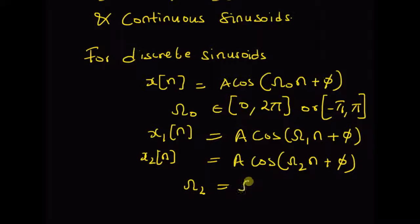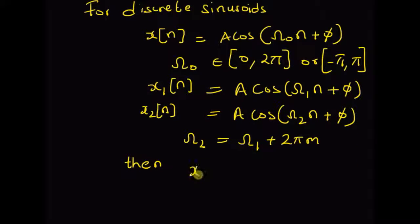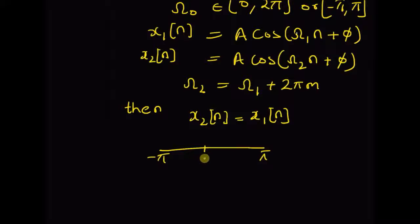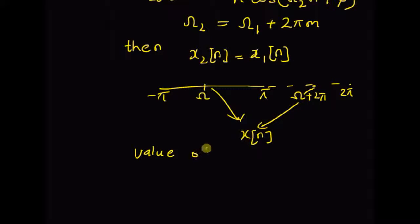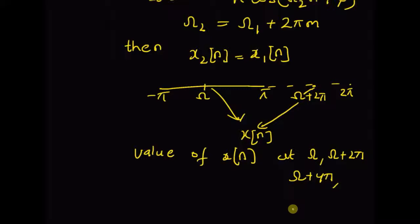Then, if omega 2 is equal to omega 1 plus a multiple of 2π — that is, 2πm — then x2 of n is equal to x1 of n. That is, the two sequences are basically the same. This theorem claims that for values of omega between −π and +π, and values between π and 2π, the value of the signal at omega is exactly the same as the value at omega plus 2π, omega plus 4π, and so on.